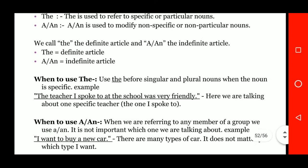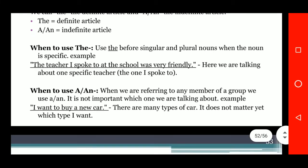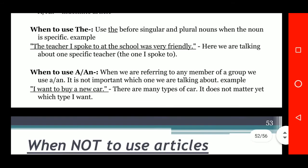When to use 'the': use 'the' before singular and plural nouns when the noun is specific. Example: 'The teacher I spoke to at the school was very friendly.' When to use 'a' and 'an': when referring to any member of a group, we use 'a' or 'an' — it is not important which one we are talking about. Example: 'I want to buy a new car.' There are many types of car, so it does not matter yet which type I want.